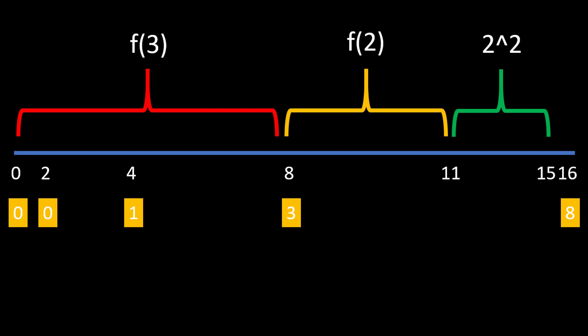On a number line from 0 to 16: values 0 to 8 have the primary bit 0, contributing f(3). Then the primary bit is 1 and next bit is 0, covering up to 11, contributing f(2). Starting from 12 to 15, the first two bits are 1-1 forming consecutive ones, so we directly add 2^2. That gives us the formula for finding consecutive ones at any power of 2.